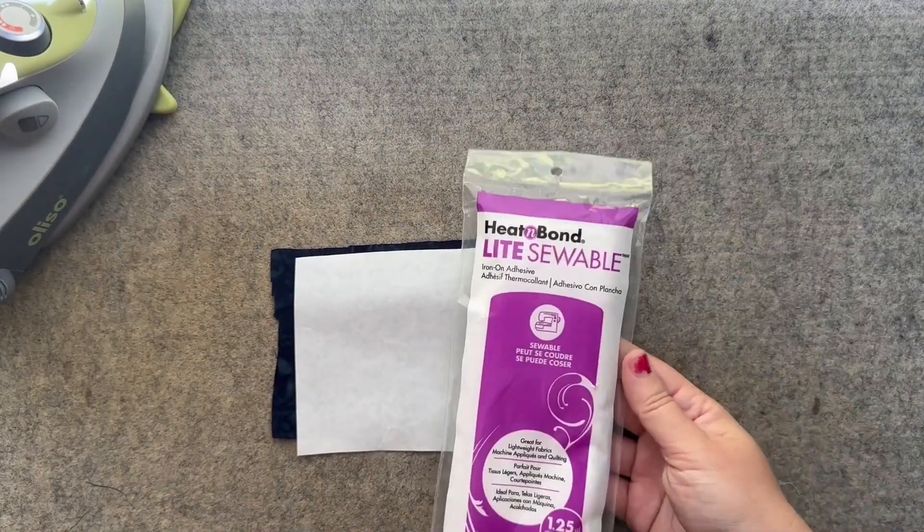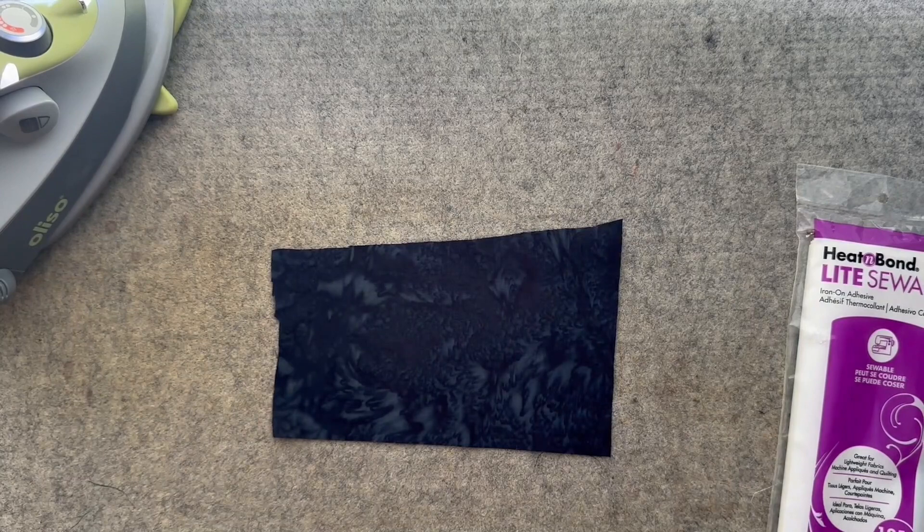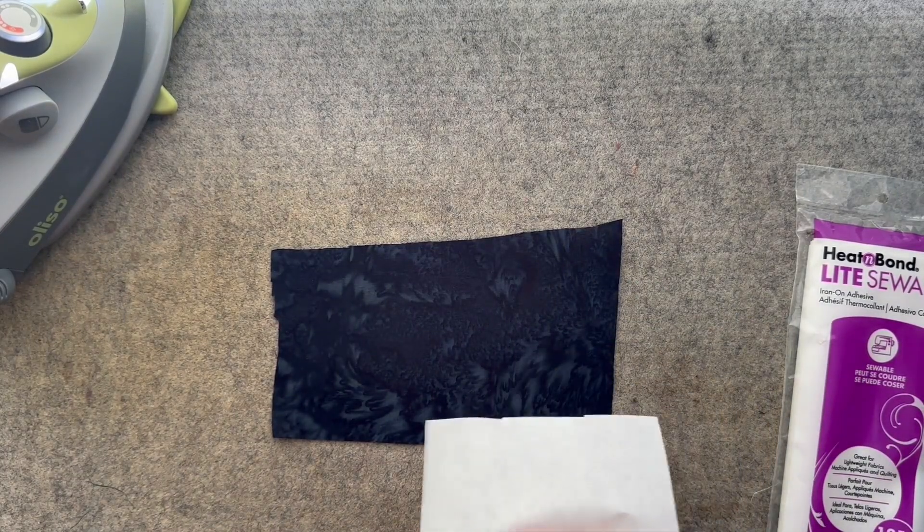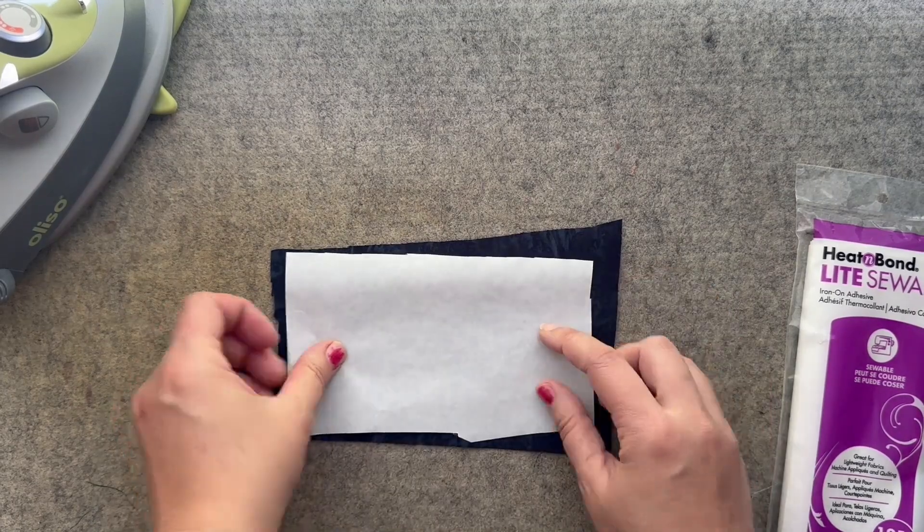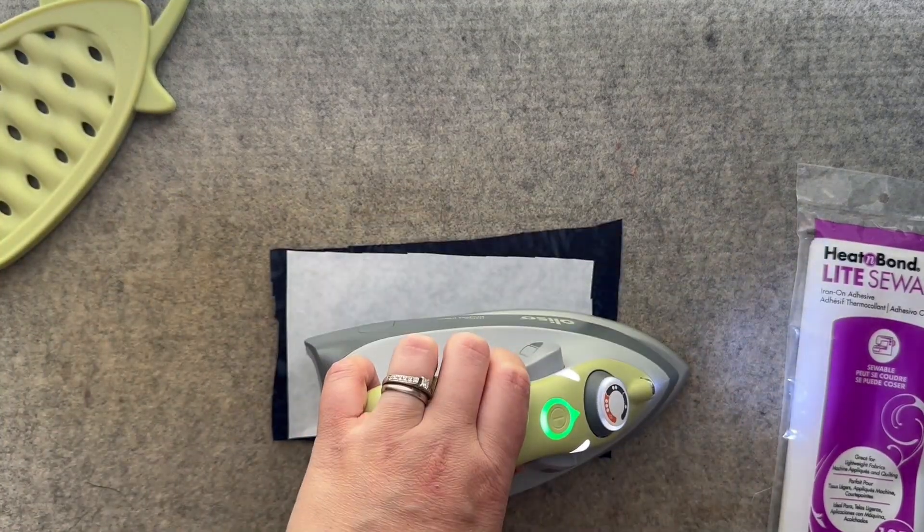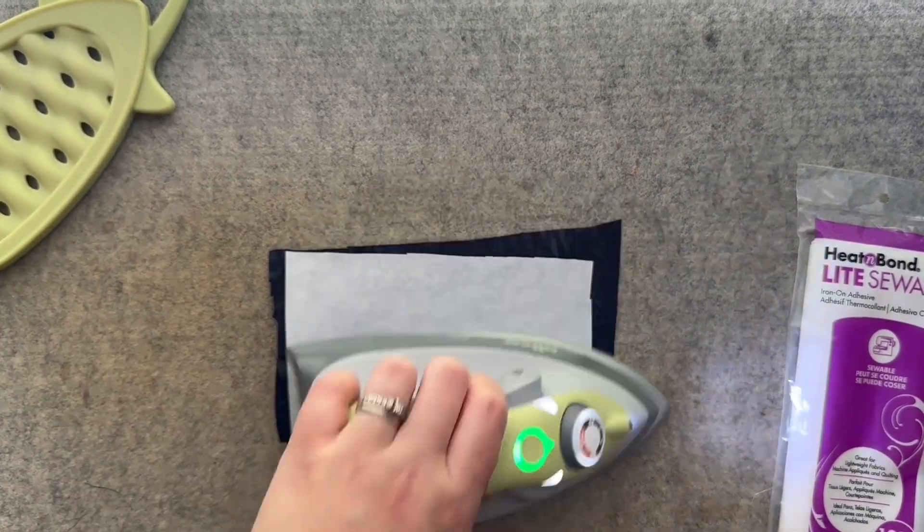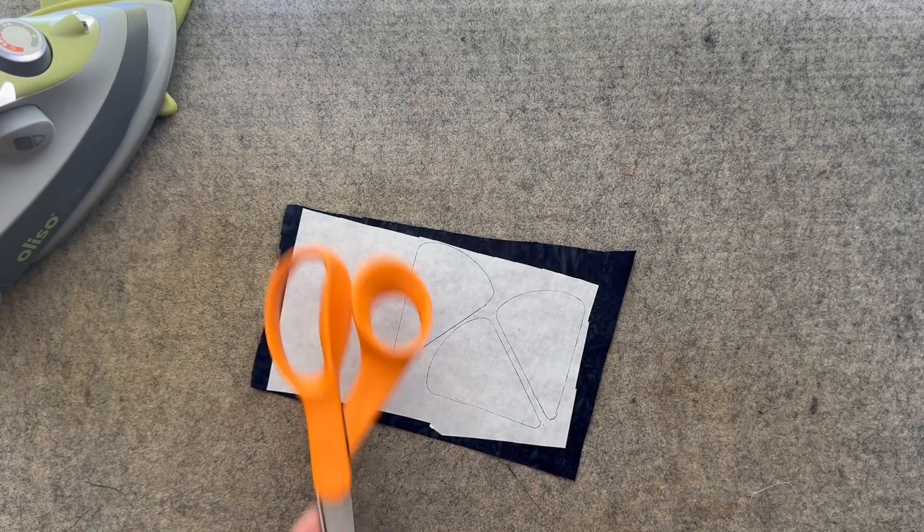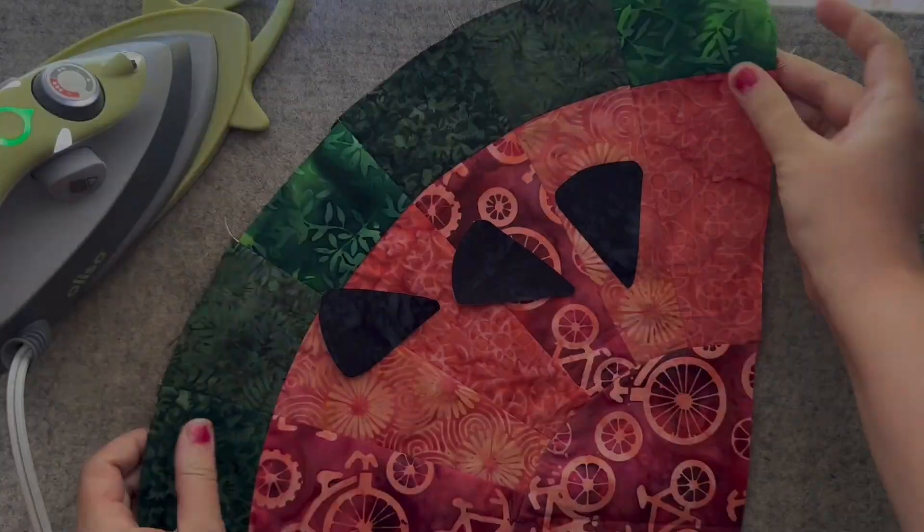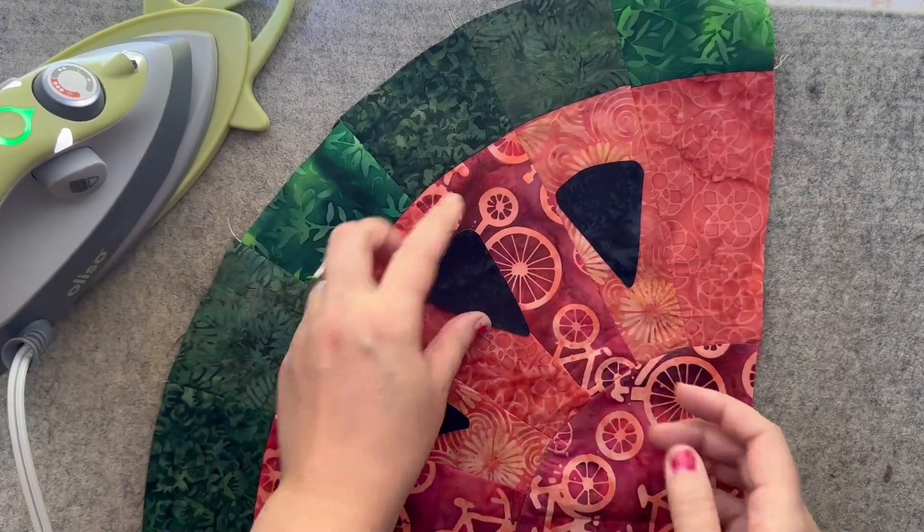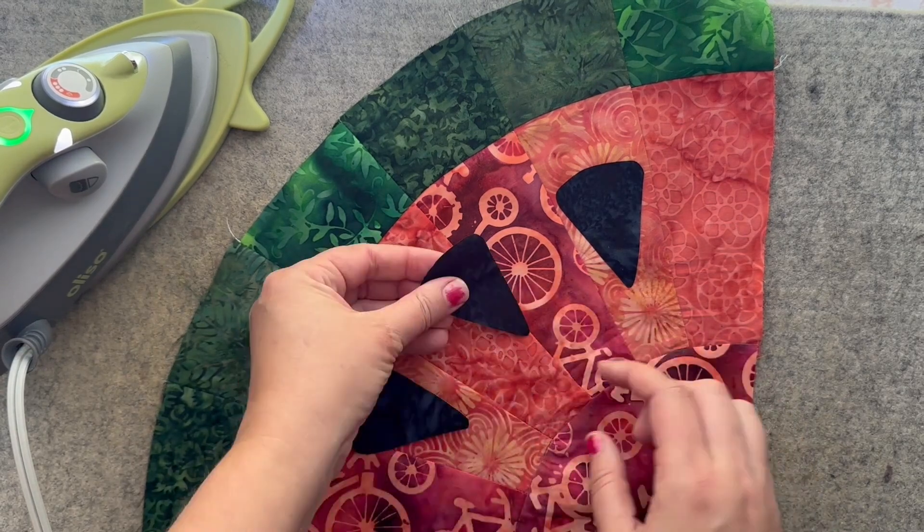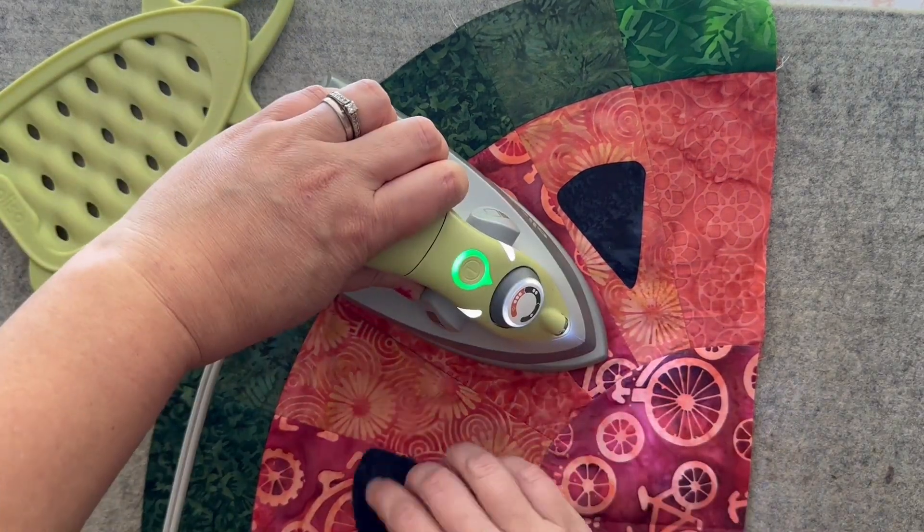Now it is time to add our seeds. I am using heat and bond light sewable fusible web to adhere my seeds to my watermelon. Start by fusing the fusible web to your black fabric, tracing and cutting out the seeds. Adhere those seeds to the front of your watermelon wedge and then applique or stitch in place those seeds.